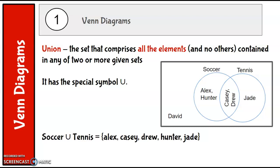So the union of soccer and tennis is all of the elements that are in soccer and all of the elements that are in tennis. So we have Alex, Casey, Drew, and Hunter all play soccer, and then Jade plays tennis and David doesn't play either one of those. And you can see Casey and Drew play both soccer and tennis.